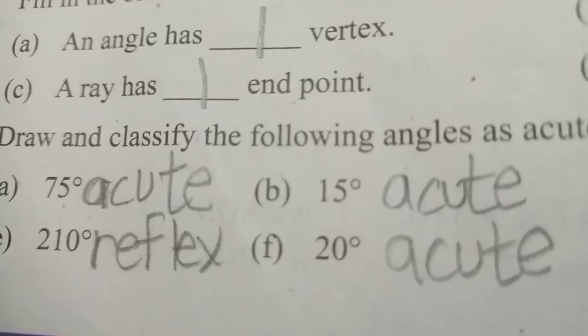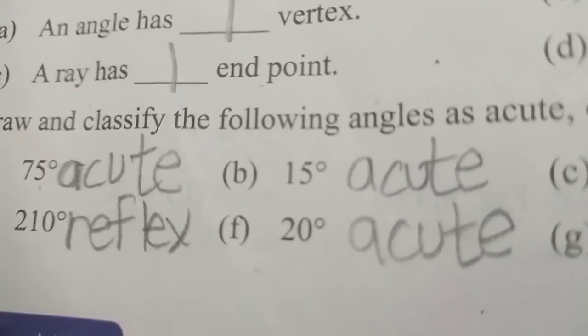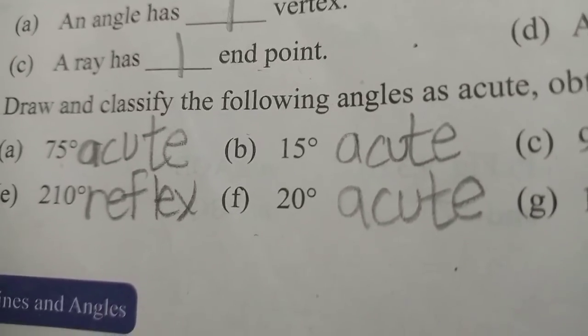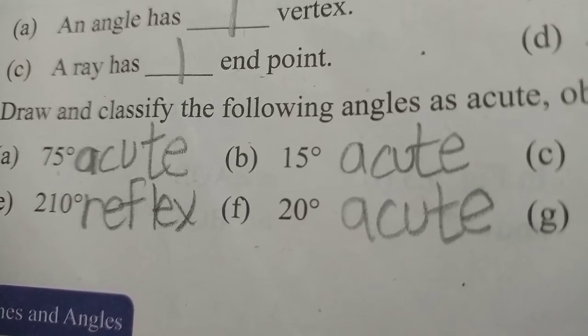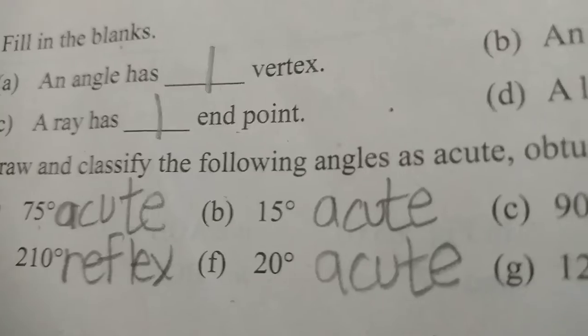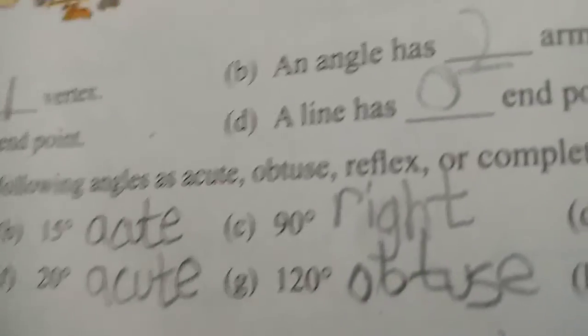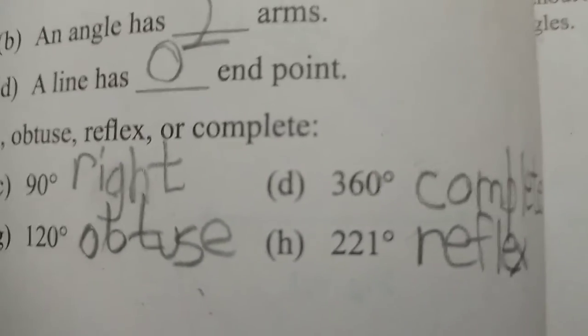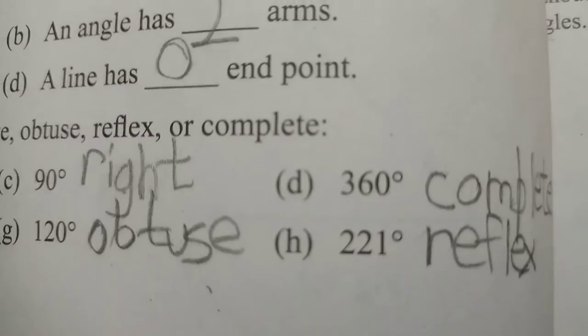75 degrees is less than 90, so acute. 15 degrees is acute. 90 degrees is right. 360 degrees is complete. 210 degrees is more than 180, so reflex. 20 degrees is acute. 120 degrees is obtuse. 221 degrees is reflex.